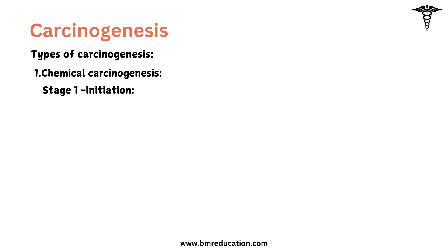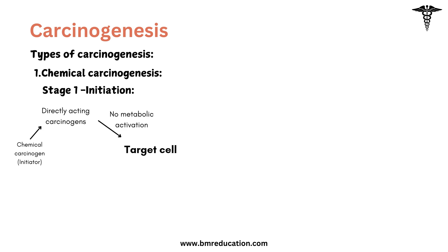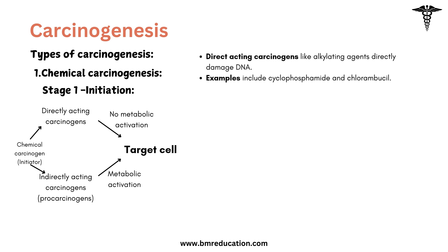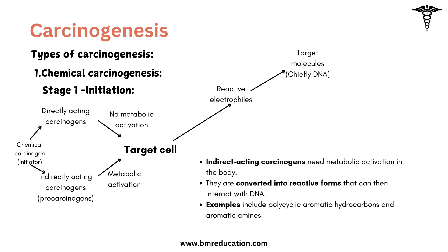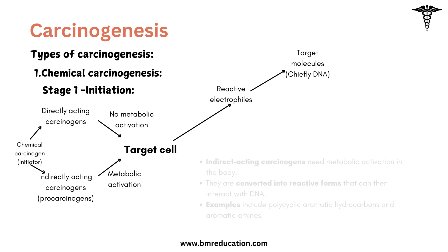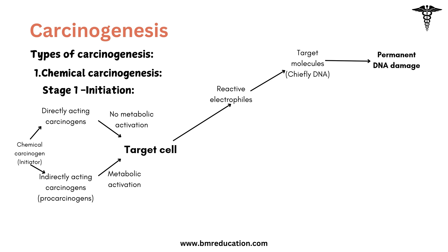The first stage is initiation. During this phase, a chemical carcinogen known as an initiator interacts with the cell. These initiators can be direct-acting, meaning they are already active and do not need metabolic activation, or indirect-acting, requiring metabolic conversion to become carcinogenic. Direct-acting carcinogens like alkylating agents directly damage DNA, while indirect-acting carcinogens need metabolic activation in the body and are converted into reactive forms that interact with DNA. The key event is DNA damage leading to mutations, which becomes permanent if not repaired, setting the stage for potential cancer development.